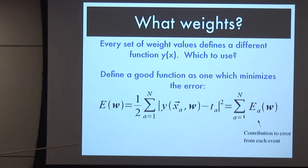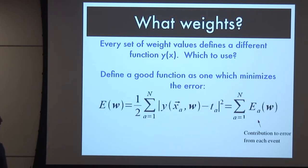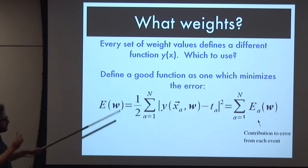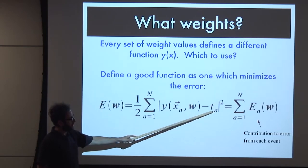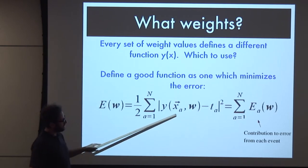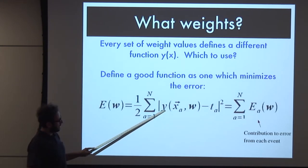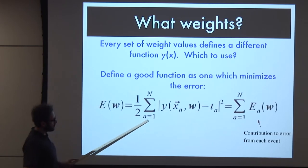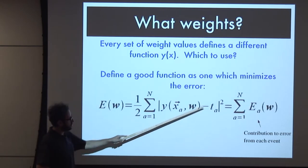I haven't given you any justification to say that this will work - let's just try it and see what it can do. We can ask how good a particular function is: given a set of weights, if I know what the right answer is - this input is signal, this input is background - then I can define how far the answer is from the truth. I compare the output to the truth, sum over a bunch of generated examples, and compute error squared.